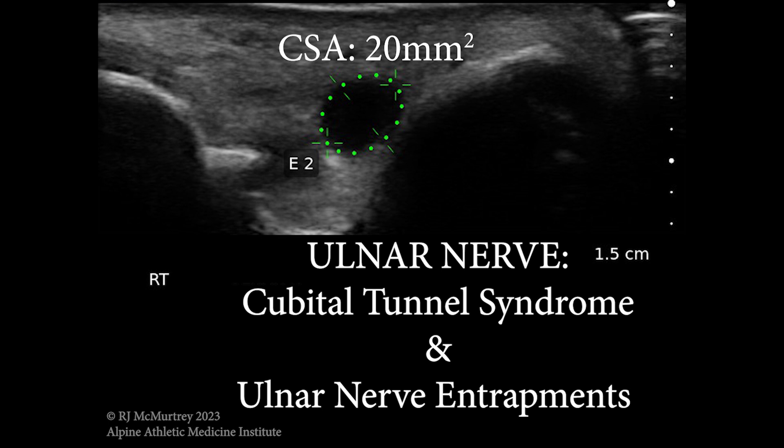Hi everyone, I'm Dr. McMurtry and I do a variety of nerve, spine, and joint interventions amongst other things. I've just seen several cases of ulnar nerve pathologies lately and wanted to make a quick summary and overview of these types of pathologies, since it's not just one simple diagnosis. There are actually many different things that can be going on at many different sites along the ulnar nerve, so I'll do a quick overview of ultrasound imaging and interventions.